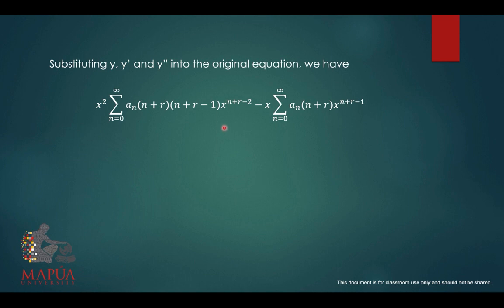Into the original equation, we will have the following. Then simplify this by multiplying or combine the power of x. That gives you n plus r minus 2 plus 2 or n plus r. And then here you have x, so multiply by x raised to n plus r minus 1. That gives you also x raised to n plus r. So no changes on the last term.